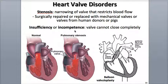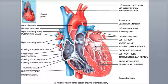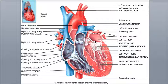Insufficiency, or incompetence, is caused by a valve that doesn't close all the way. One of the most common valve disorders is mitral valve prolapse, or MVP, where one or both cusps of the mitral or bicuspid valve are pushed into the left atrium during ventricular contraction. This can lead to mitral insufficiency, where blood flows backward into the left atrium from the left ventricle during contraction.